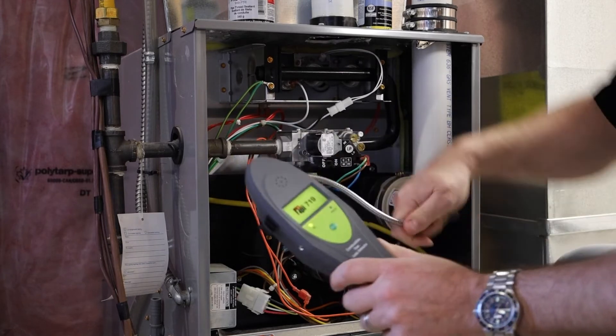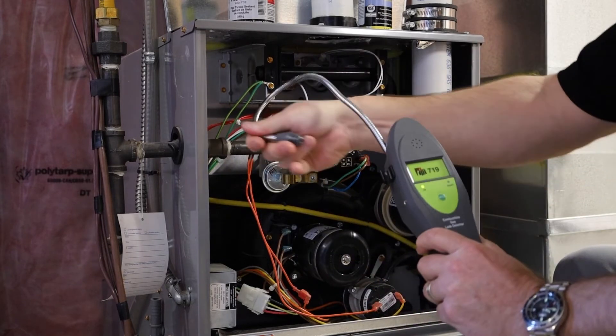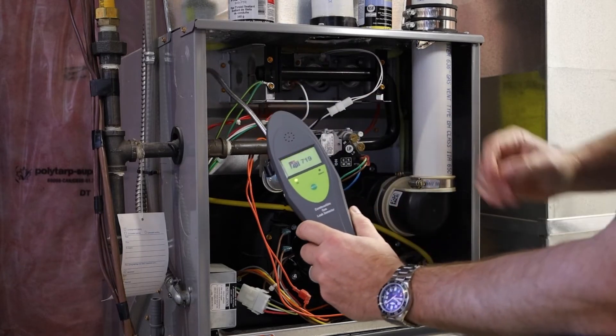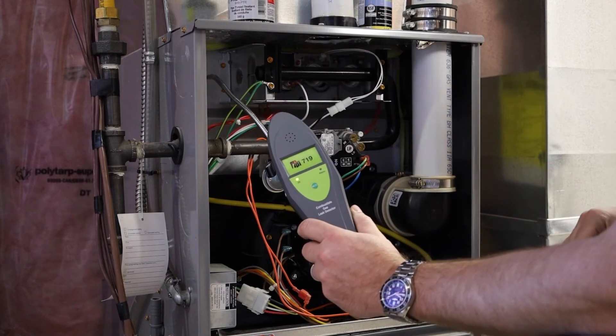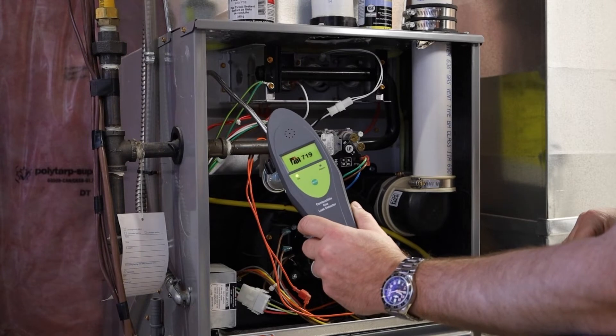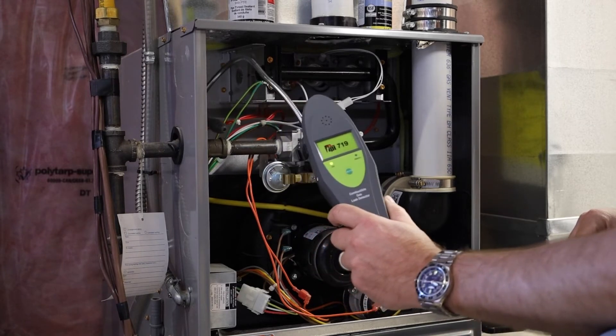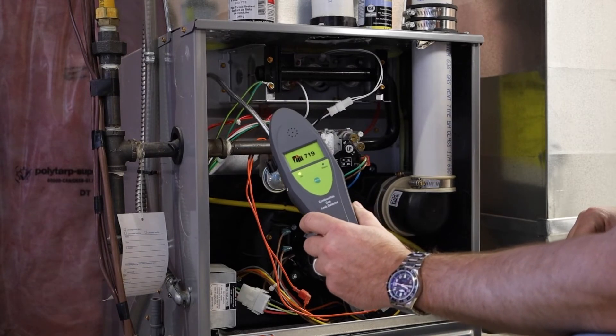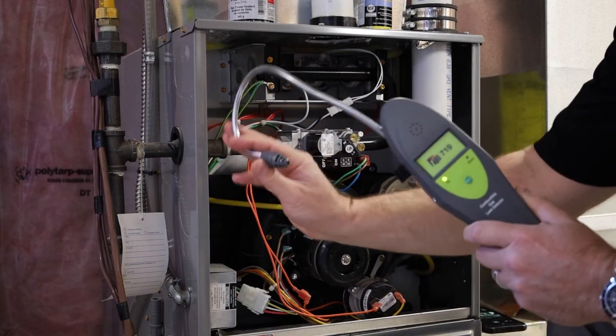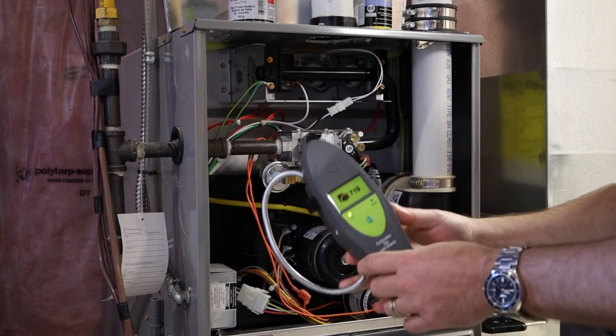You got the flexible gooseneck on here, which is great for reaching behind a pipe where you wouldn't be able to see it if you were using soap. So that's where an electronic leak detector surpasses the soap method.